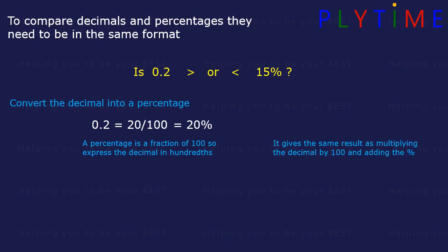It gives the same result as multiplying the decimal by 100 and then adding the percentage sign. So the decimal is 0.2. If we multiply that by 100, we move the digits 2 places to the left, which becomes 20, and add the percentage sign — it will be 20%. 20% is greater than 15%, so we can say 0.2 is greater than 15%.